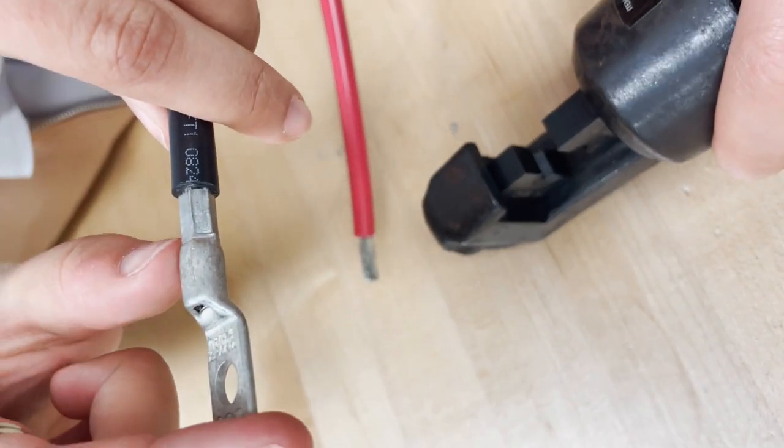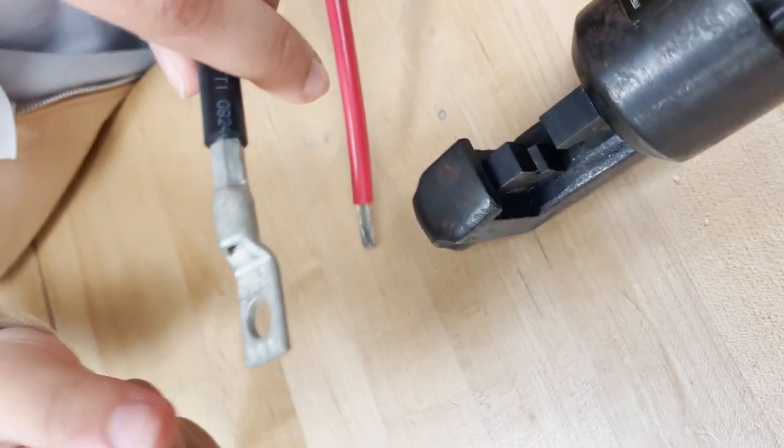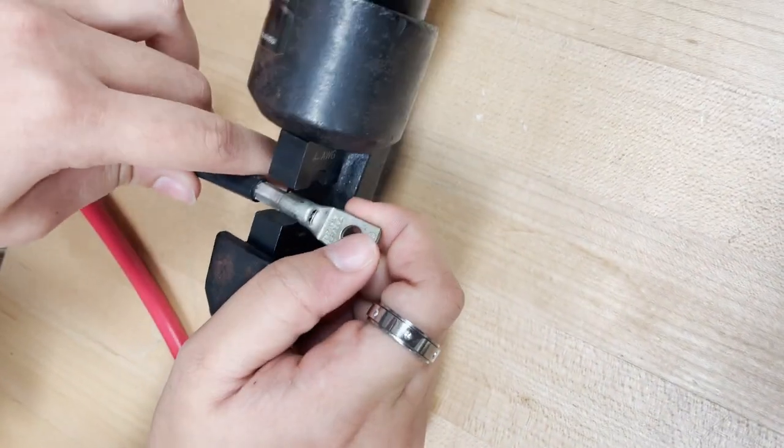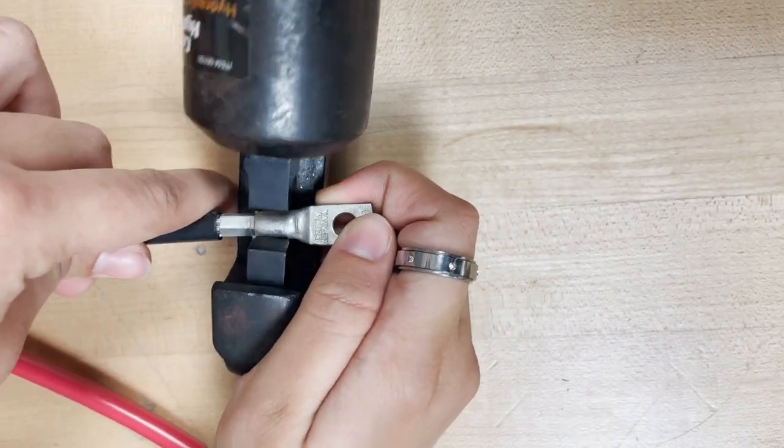So the next step is to crimp this top part. We want to make sure that we're not overlapping with this crimp. So now we're going to do a second crimp just right over the lip. Make sure to engage the crimper.